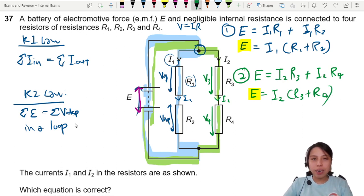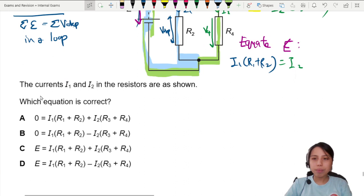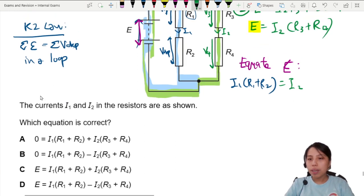Okay, let's equate. Since they both have the same EMF, this is E. On the left side, I have I1(R1 + R2). Equate with the right side, I have I2. Let me move this down a bit. I see already. R3 plus R4.